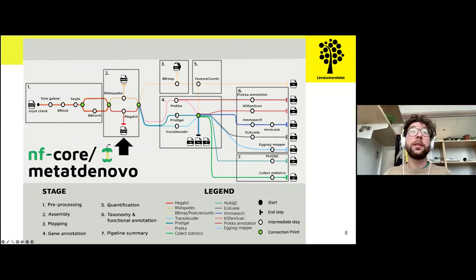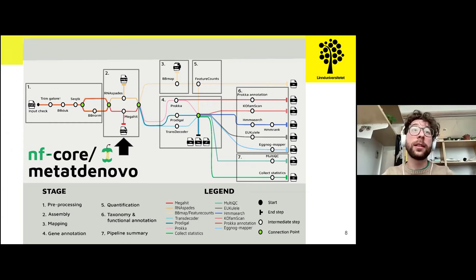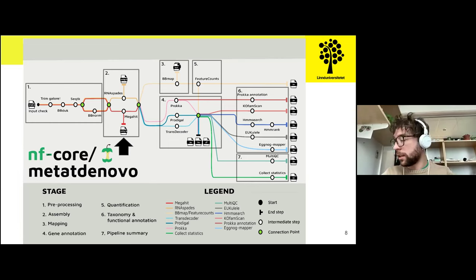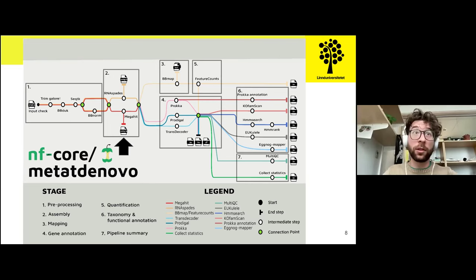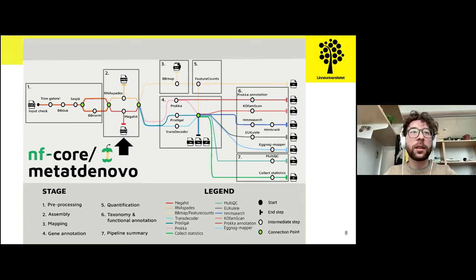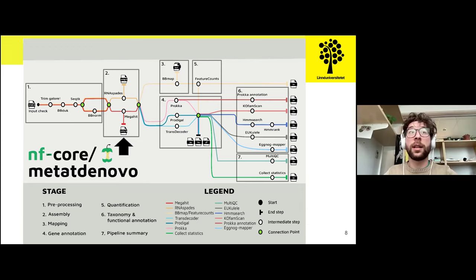Then it comes to the assembly step. We provide two different tools. Megahit is generally faster and uses fewer compute resources, while RNAspades can be a bit more challenging for servers but can give a better result in terms of assembly quality. It depends on your available resources. For us, RNAspades and Megahit seem to provide similar outputs, but when working with your own data, you know your environment and might want to try both. In a way, it's good to have them both available.